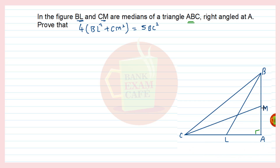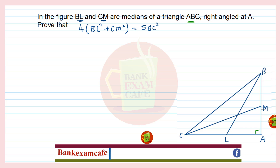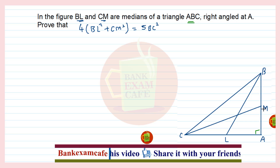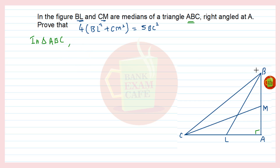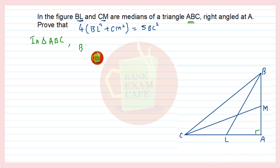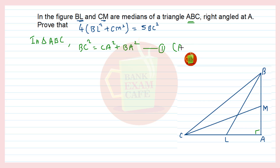We have right-angle triangles involved in the question, so we can use the Pythagoras theorem. First, we take the main triangle ABC. In triangle ABC, the square of the hypotenuse BC² = AB² + AC². So BC² = CA² + BA². Let this be equation number 1, and the reason will be the Pythagoras theorem.